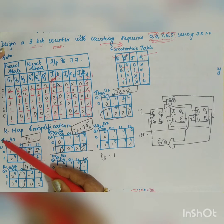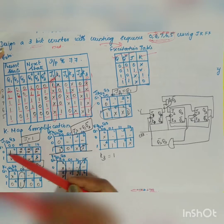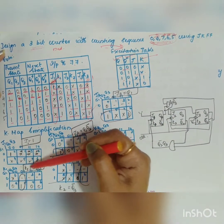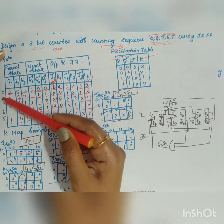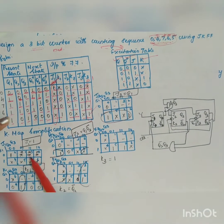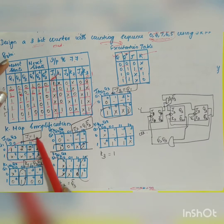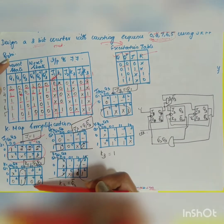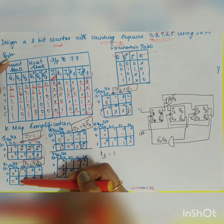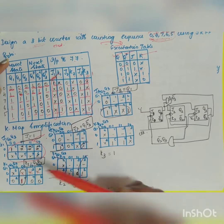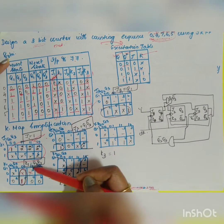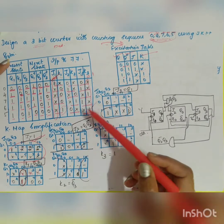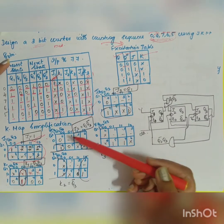For the K-map of J1 with variables Q1 Q2 Q3, positions are 0,1,3,2,4,5,7,6. J1 has a 1 only at position 0; positions 4,7,6,5 are don't-care (used states) and 1,2,3 are don't-care (unused), so all can be grouped together, giving J1 = 1. For K1, position 5 is 1 and others are don't-care; grouping gives K1 = Q2̄·Q3.